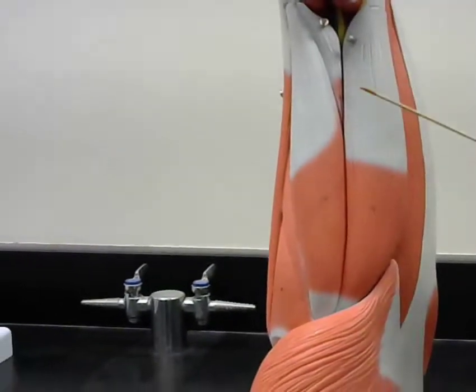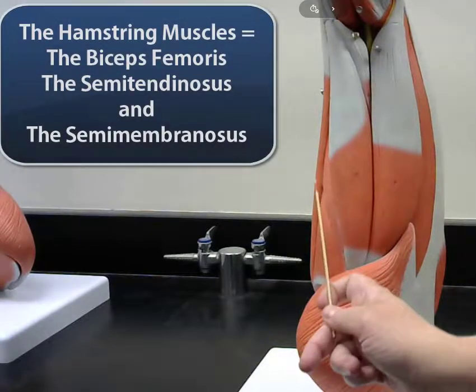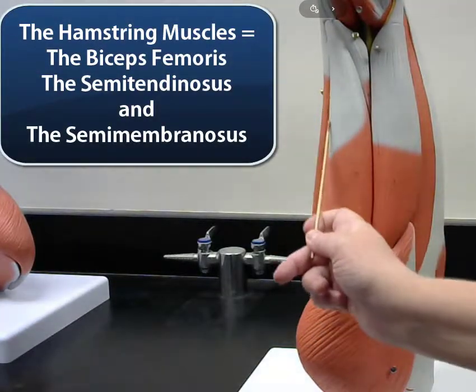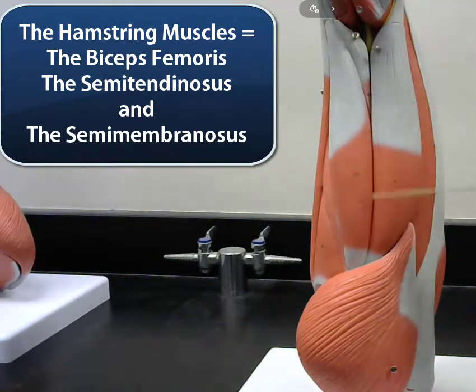Okay. So the biceps femoris, the semitendinosus, and the semimembranosus make up the hamstring muscles. And the hamstring muscles are going to act to flex the knee.